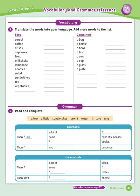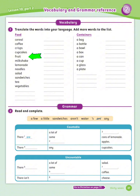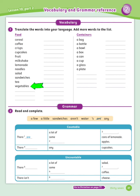Lesson 10, Part 2 — Vocabulary. Exercise number 1: Translate the words into your language and add more words to the list. Food: cereal — رقائق الذرة. Coffee — coffee. Crisps — مقرمشات. Cupcakes. Fruit — فواكه. Milkshake — مخفوق الحليب. Lemonade — عصير الليمون. Noodles — macaroni/sariyat at-tahzir. Salad — salata. Sandwiches — shataير. Tea — shai. Vegetables — alkhudrawat. Containers: a bag — hakiiba. A bottle — qinniina. A bowl — wi'a. A box — sunduq. A can.